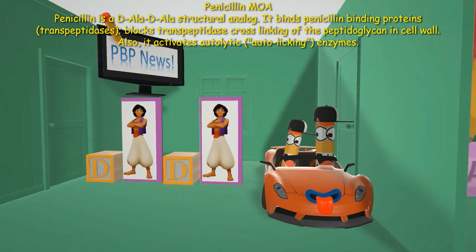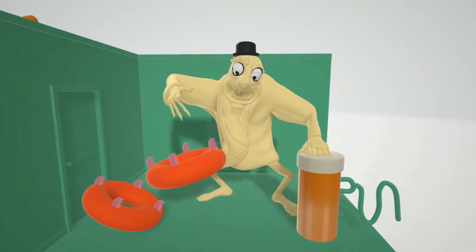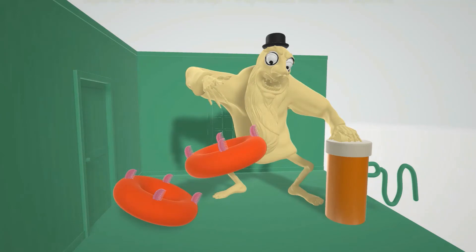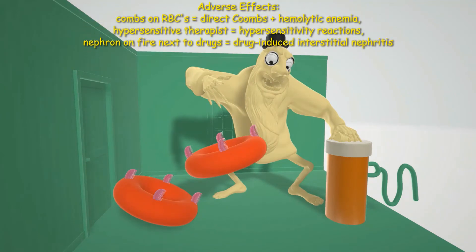Now adverse effects: the therapist is frustrated by exploding red blood cell shapes with combs on them. These represent direct Coombs positive hemolytic anemia. Penicillin in high doses can induce immune-mediated hemolysis through the hapten mechanism, where antibodies target penicillin attached to red blood cells, leading to complement activation and removal of red blood cells by the spleen.